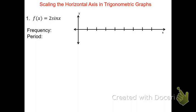It says sine of one x. If the frequency is one, 360 degrees divided by one gives me a period of 360 degrees. Now in the graph you'll notice there's eight tick marks. Eight tick marks will guarantee two complete cycles, four for each cycle. If we go to the end of the fourth tick mark, that'll be one period. That's where I'm going to label 360 degrees.